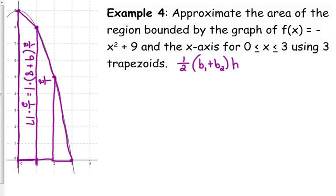Okay, when I do the second one, I've got 1 half. My bottom is 8. The top is 5. And the height is the width of the interval, which is 1. So that is 1 half of 13. And I mentioned that the last one is really a triangle, but let's keep the trapezoid idea going on. The base 1 is 5. Base 2 is 0. But there's not a top horizontal piece. And the width is 1. So that is 1 half times 5.